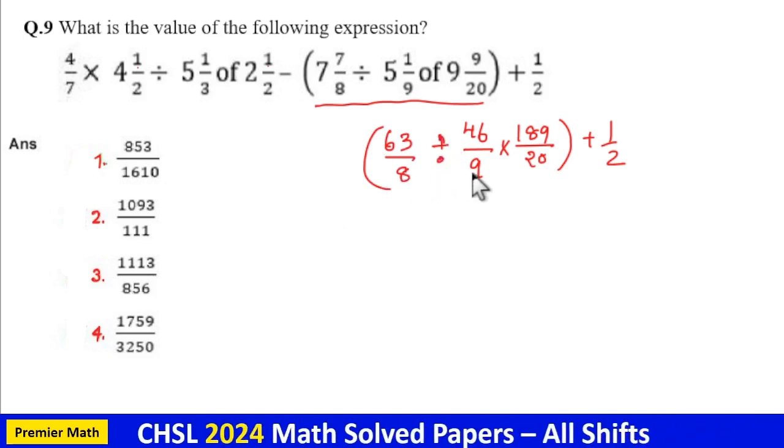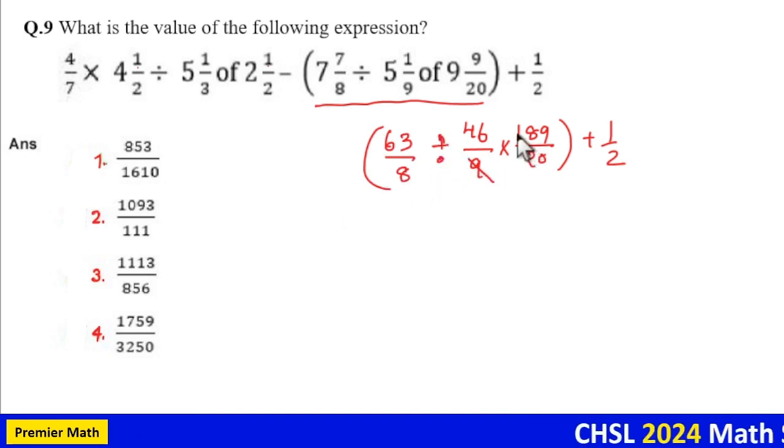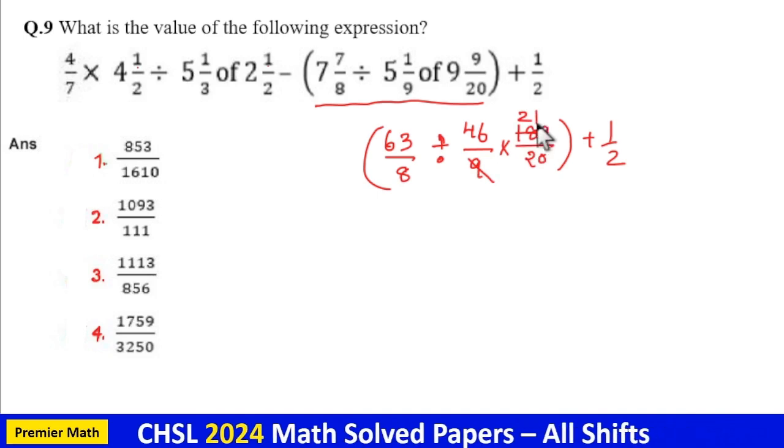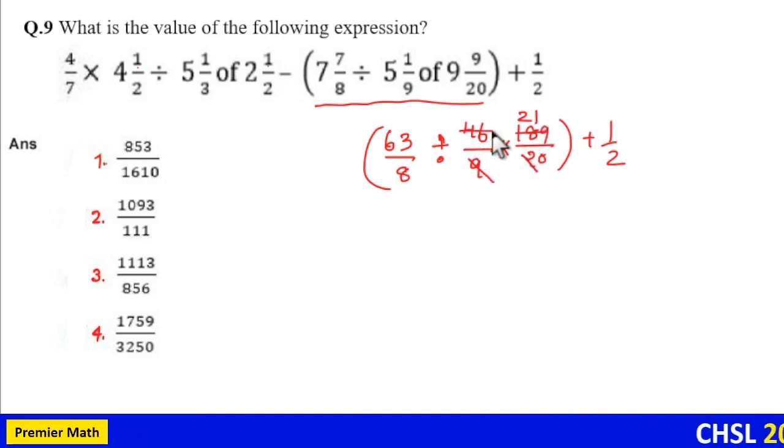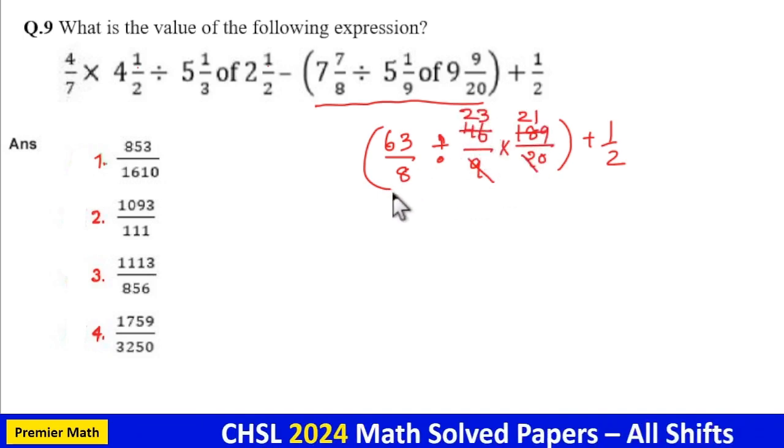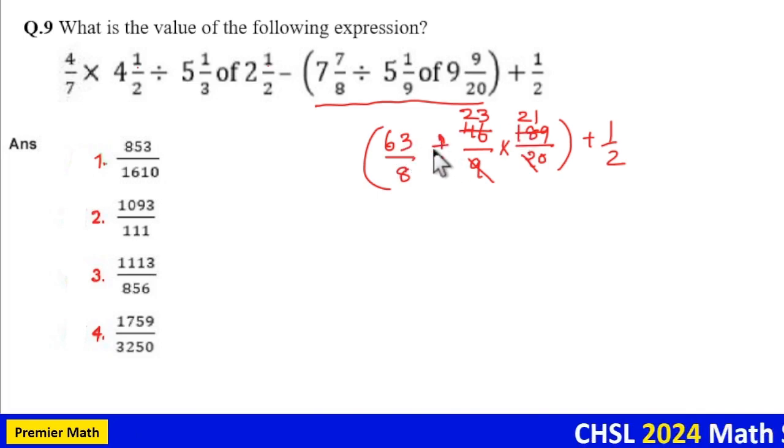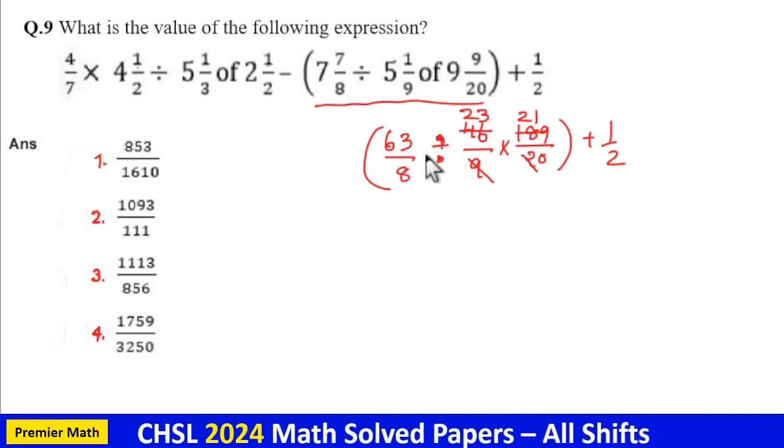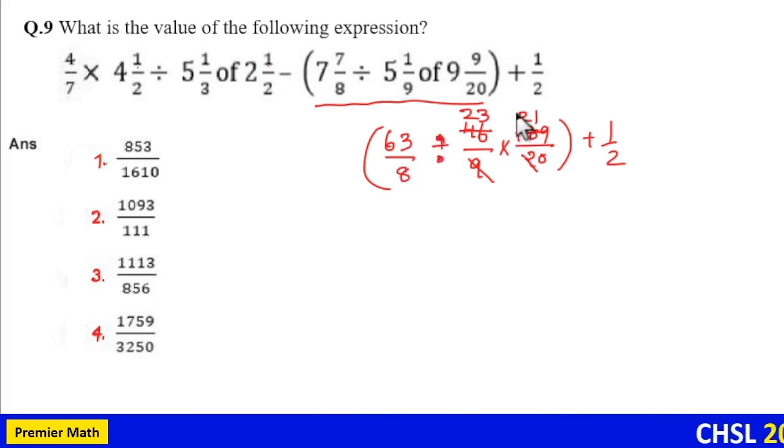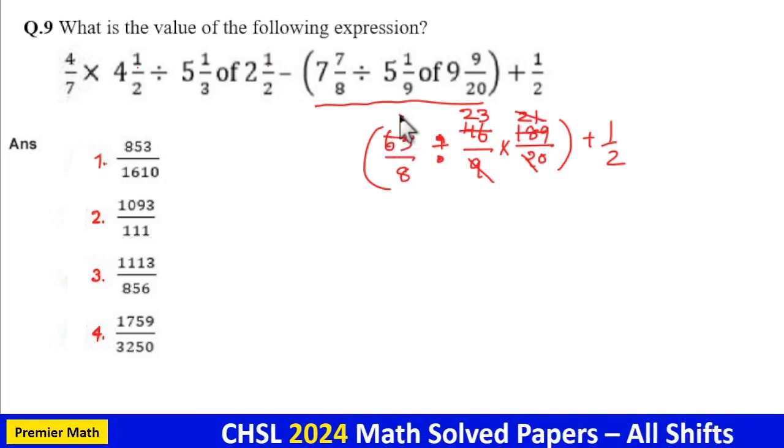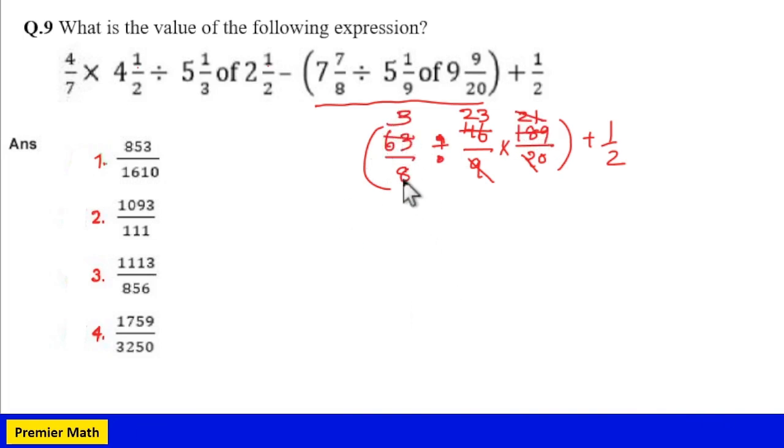Now if you solve, here 9 goes 2 times in 80, 9 goes 1 time in 9. 2 goes 23 times in 46. Now you can solve, this is division but you can solve it from here. 21 goes 3 times in 63.